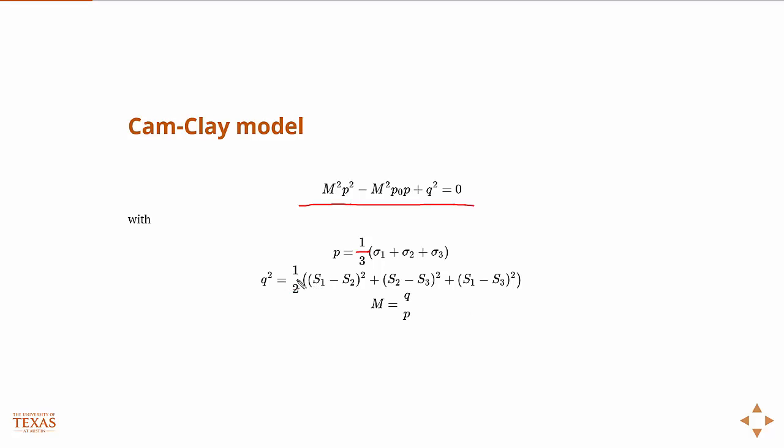And what this Q is, is a measure of the amount of shear. Technically it's the square root of 3J2. Sometimes you'll also see this as the von Mises stress, but J2, if you remember last time, we talked about invariance a little bit. So J2 is just an invariant of the deviatoric stress.